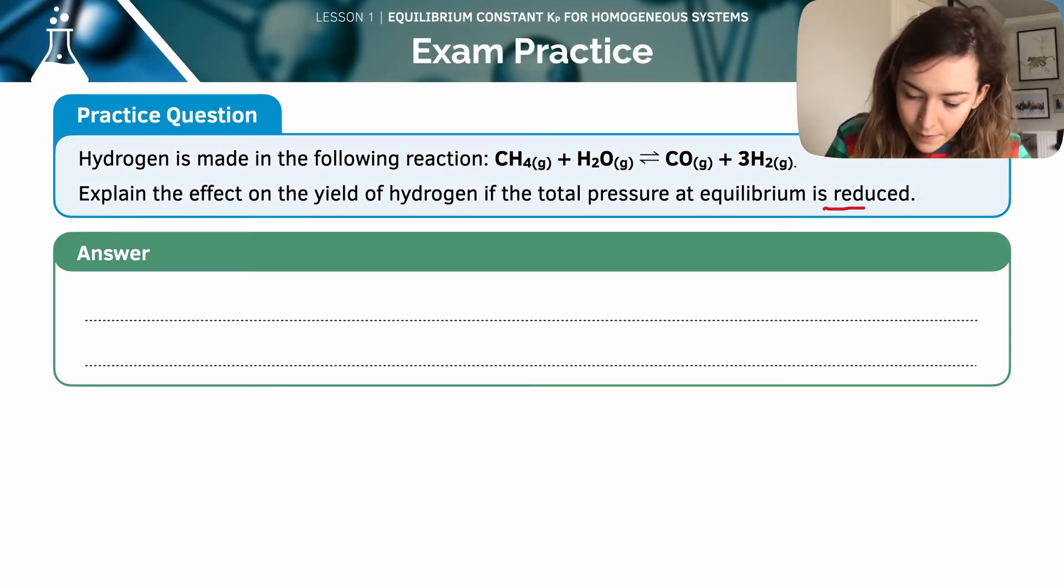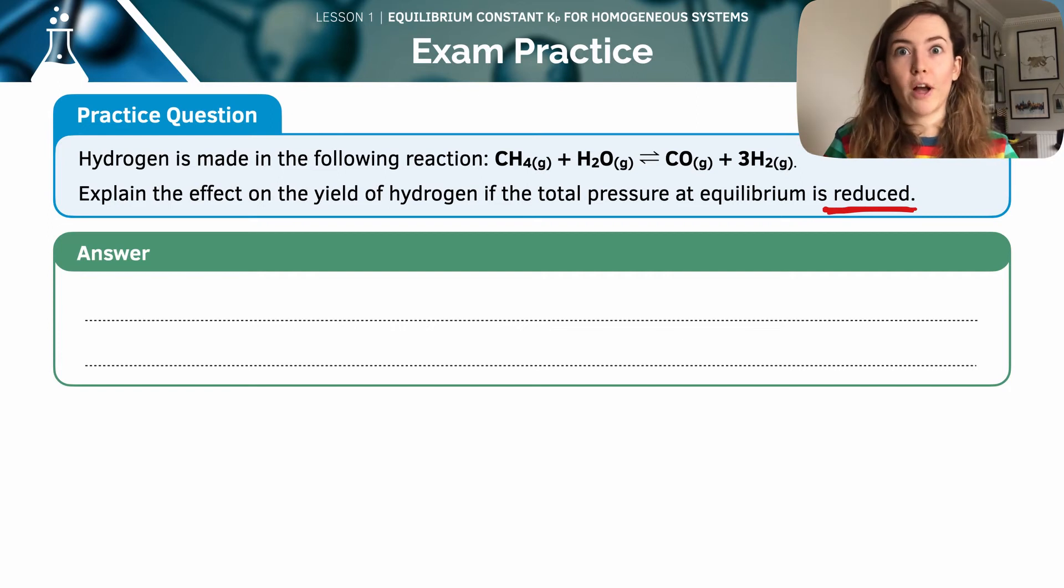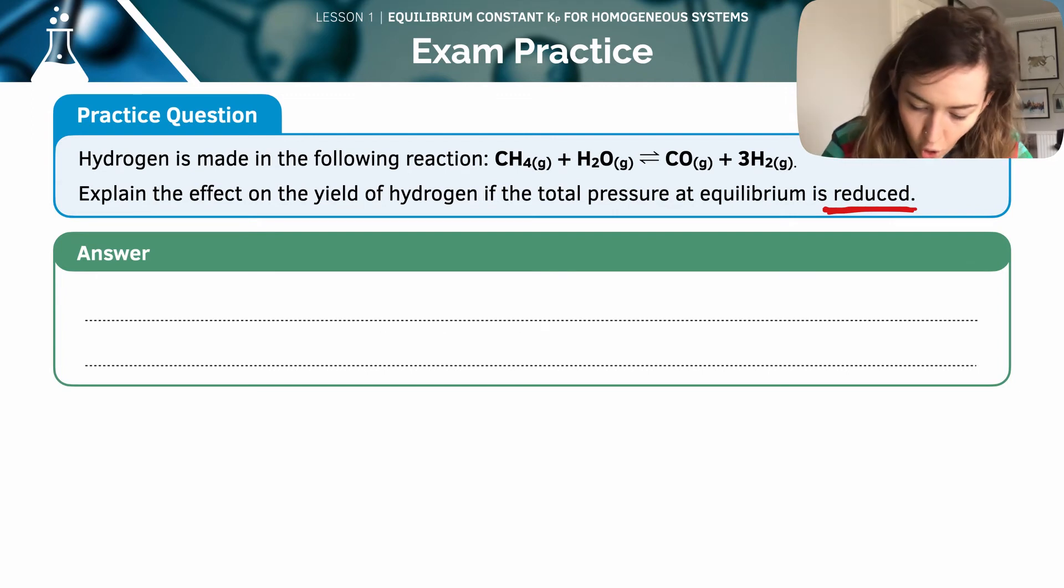So they're reducing the total pressure. So first of all, I'm going to just check. It's to do with pressure. So I'm going to look at the gaseous moles and I can see that I've got overall two gaseous moles on the left hand side. And I've got four gaseous moles on the right hand side. You can see I've got one here, one here. So that's two and I've got one and then three here. So that's four in total.